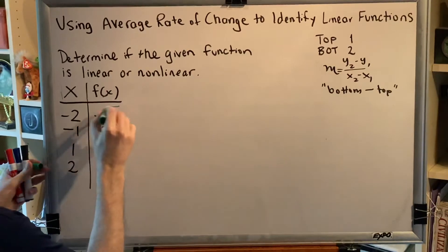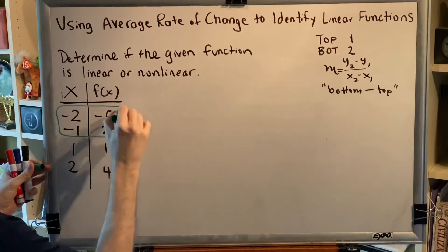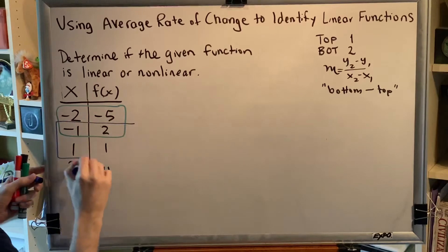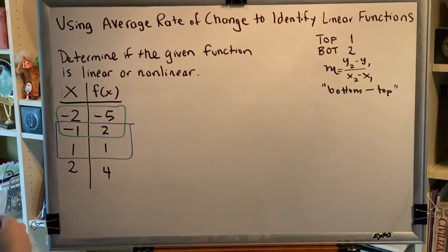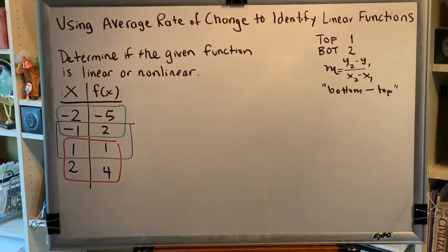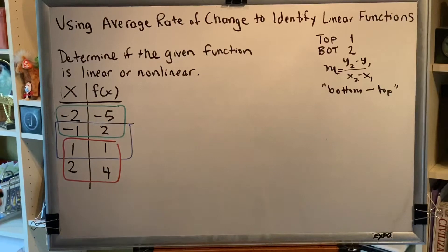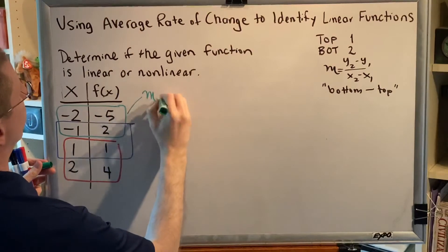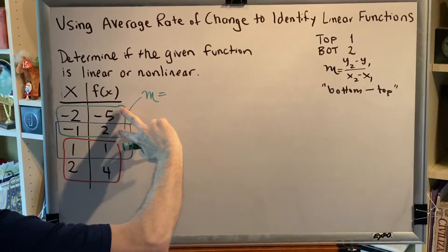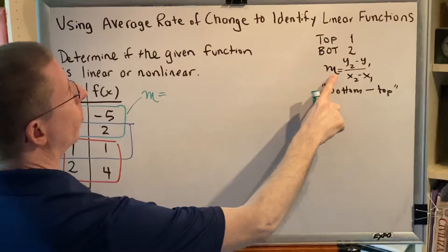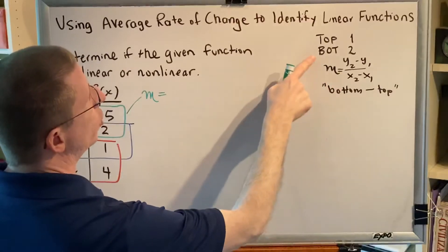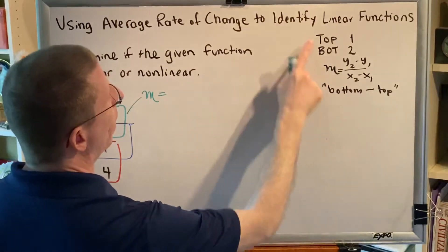We need to compute the slope between each pair of adjacent points. We're always going to call the bottom point point two and the top point point one. Since our slope formula is y2 minus y1 over x2 minus x1, that means it will always be a bottom minus a top value.